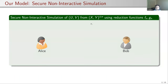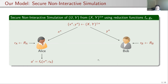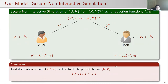The objective is to simulate a sample of target distribution UV from independent samples of the source distribution XY. Alice receives X^n and Bob receives Y^n. Additionally, Alice has access to private randomness R_A, and Bob has access to private randomness R_B. Alice applies a reduction function on her samples and private randomness to obtain output U'. Similarly, Bob applies a reduction function on his samples and private randomness R_B to obtain output V'.